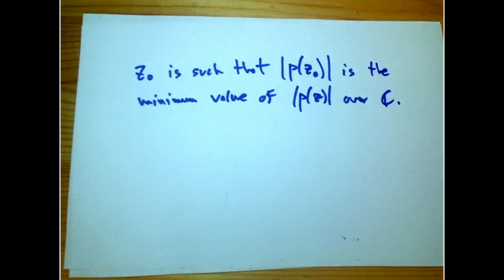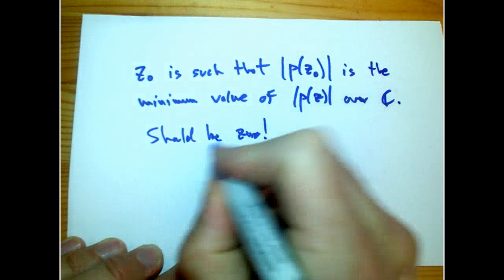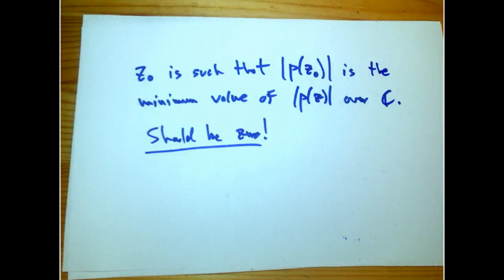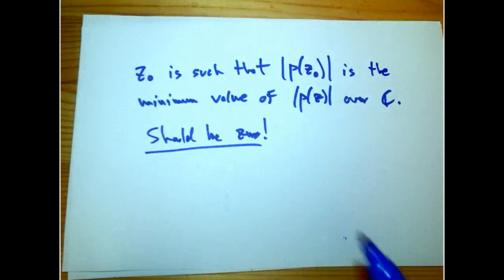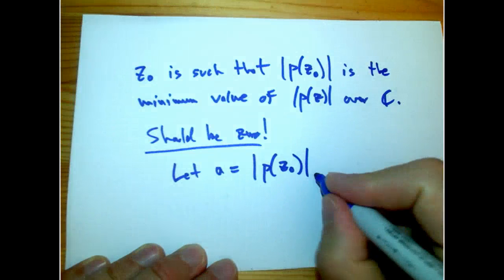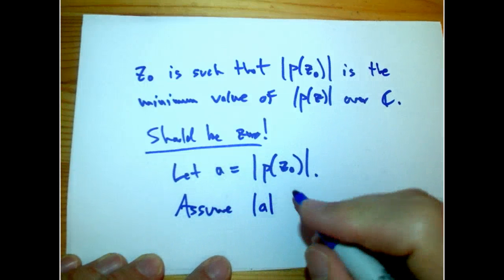Now, what should that minimum be? What are we trying to prove about P? We're trying to prove it has a zero, so this minimum should be zero. It's actually often easier to solve a minimization problem than an equation directly — this is an end run around solving equations, and it's incredibly common both practically and theoretically. Let's let A be that minimum value. We're going to do a proof by contradiction and assume that the magnitude of A is bigger than zero.